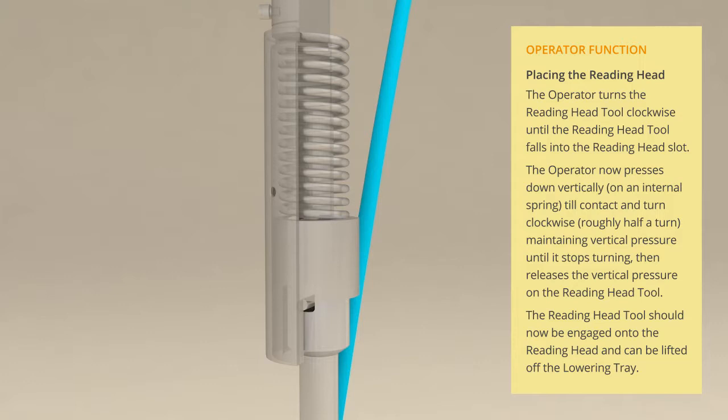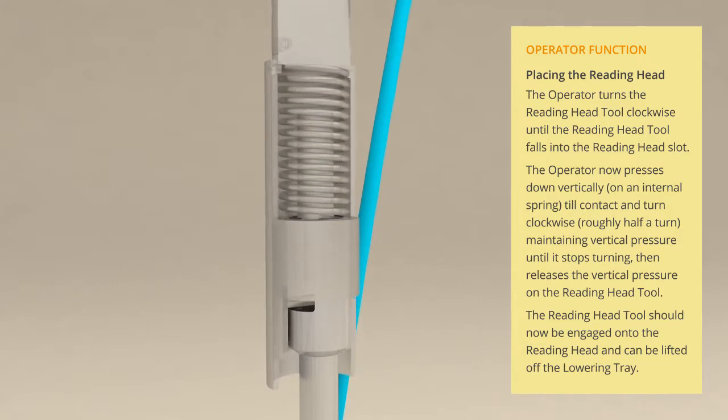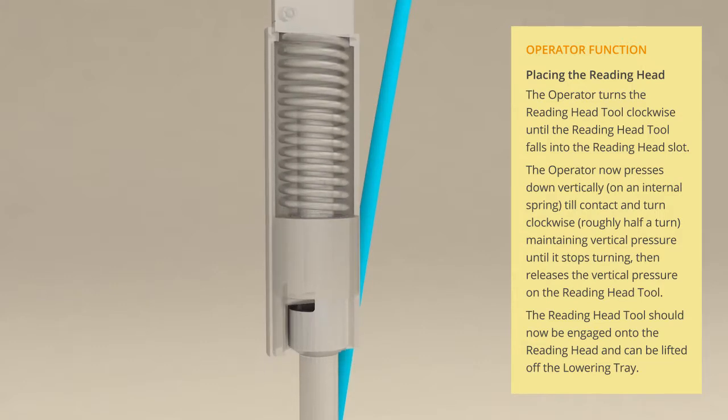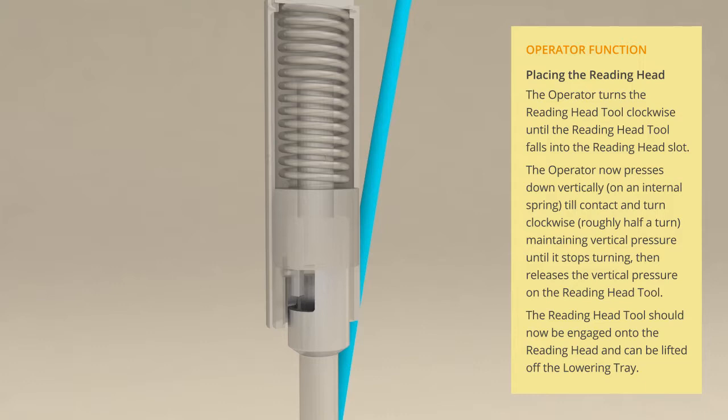The operator now presses down vertically on the internal spring inside the reading head till contact and turns clockwise for roughly half a turn, maintaining vertical pressure until it stops turning.